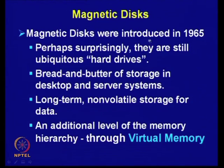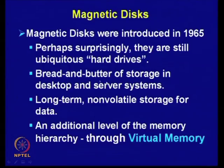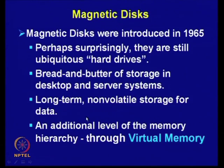Magnetic disks were introduced back in 1965 and perhaps surprisingly they are still ubiquitous as hard drives. If you look at any computer system, you will find a hard disk is always present — it has become ubiquitous with computer systems. This is the bread and butter of storage in desktop and server systems. Magnetic disks are used for long-term, nonvolatile storage, meaning even when power is removed, information is retained. This has provided the additional level of memory hierarchy through virtual memory.